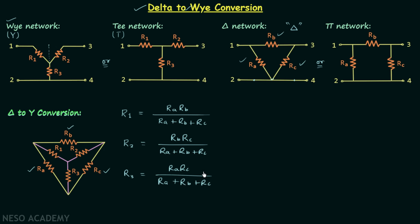Remember these results. Whenever you have inductors in place of resistors, the formula will have the same pattern. And even if you have impedances in place of resistors, you are going to have the same pattern in the formula. So note that for inductors and impedances the formula follows the same pattern.